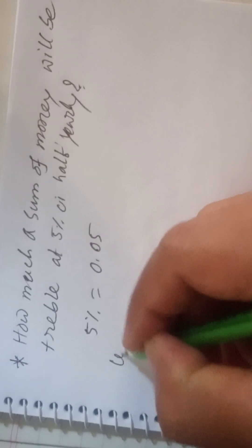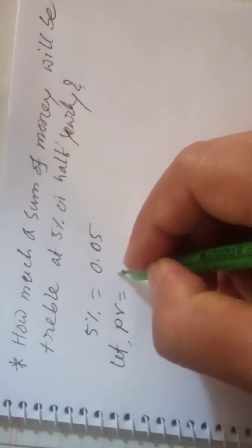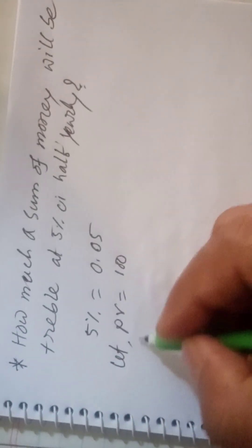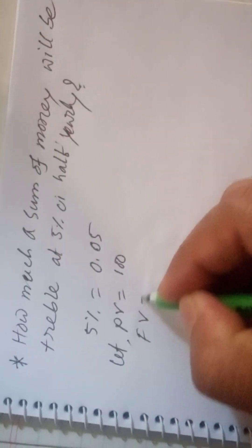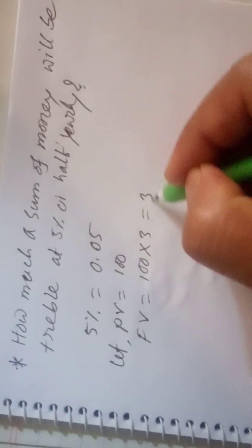Let P be the present value of money, 100. Then FV will be 100 times 3, that means triple, 300.